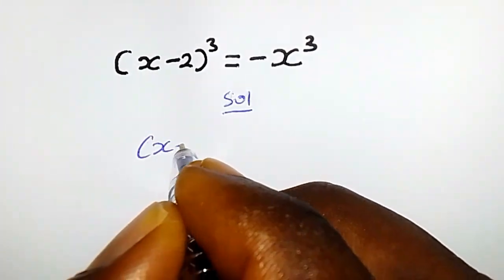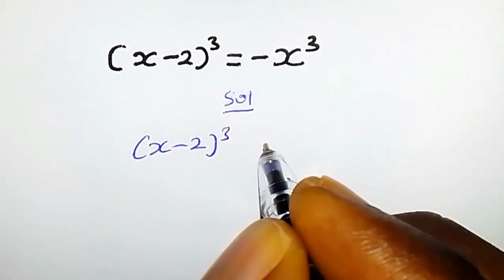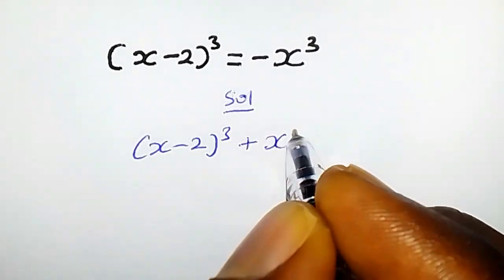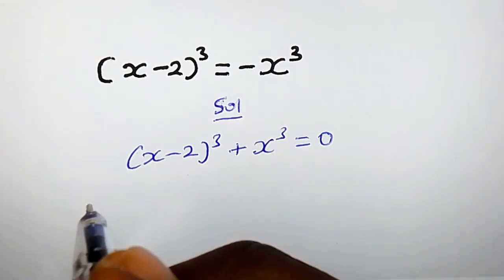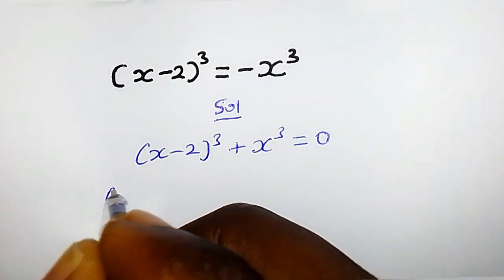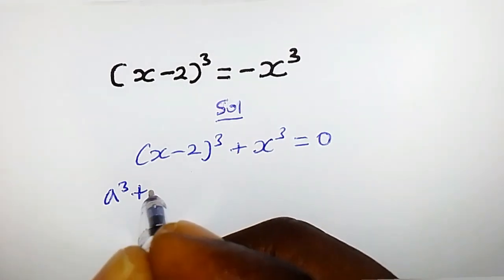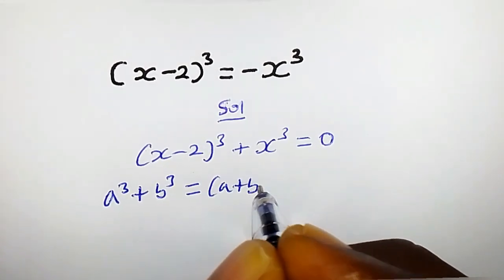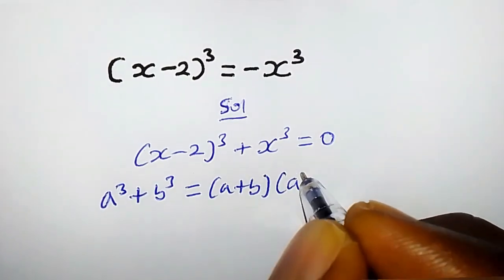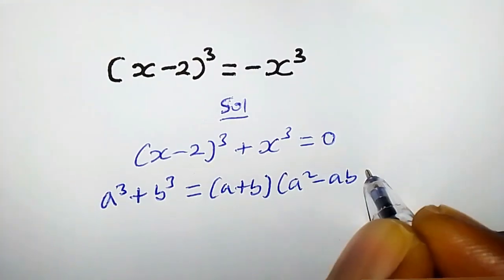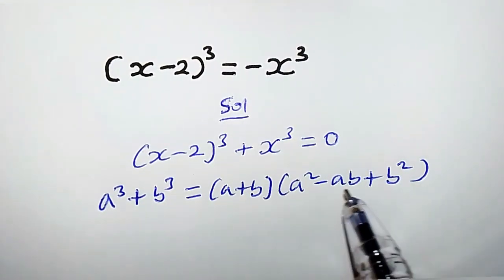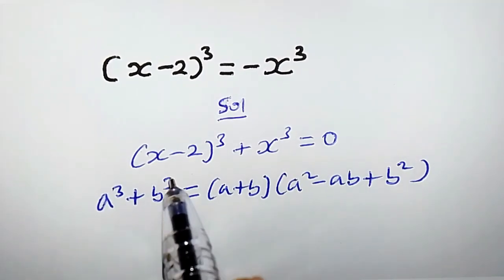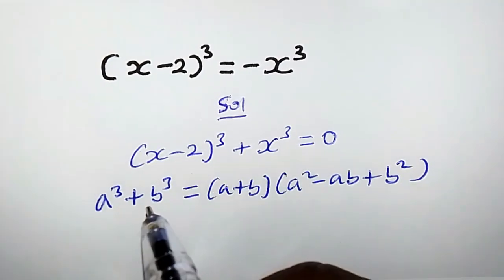We have (x minus 2) all to the power of 3. When we transfer the right-hand side to the left, it becomes plus x to the power of 3 equals zero. Now, recall that whenever we have a³ plus b³, it's the same as writing (a + b)(a² - ab + b²). If you expand this, you will get the left hand side back. So now we are going to apply this property to this left hand side.